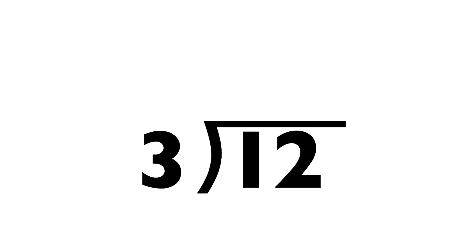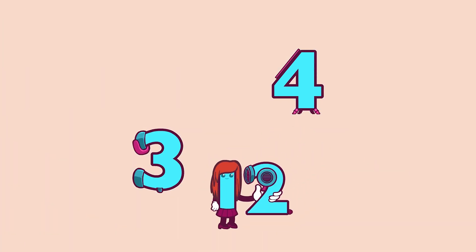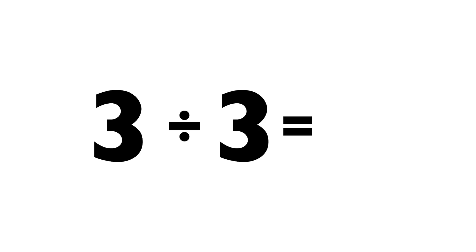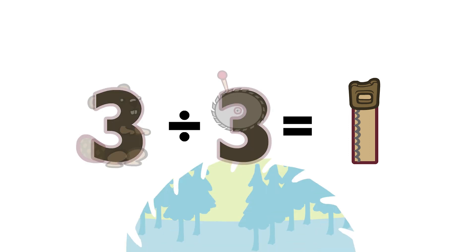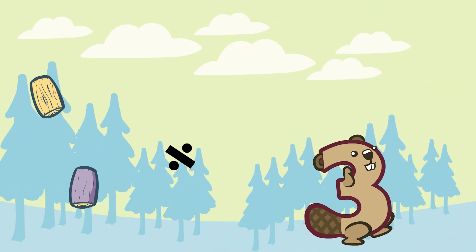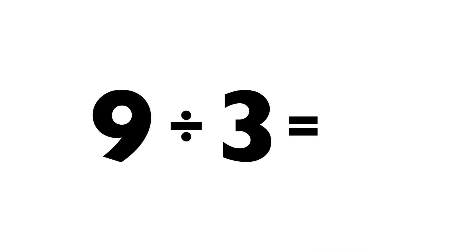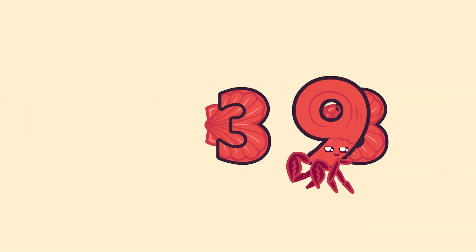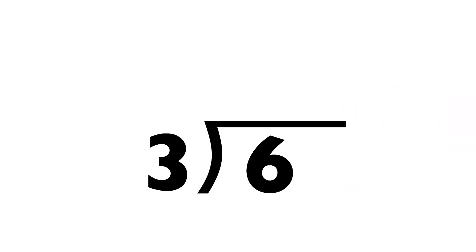Twelve divided by three equals four. Three divided by three equals one. Nine divided by three equals three. Six divided by three equals two.